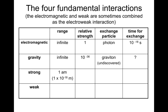The strong force has a range of about 1 times 10 to the minus 18 meters, so relatively short. Relative strength is 100, so it's approximately 100 times stronger than the electromagnetic force. The exchange particle is the gluon. Time for exchange is very fast — 10 to the minus 23 seconds.